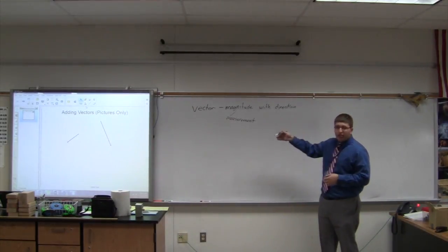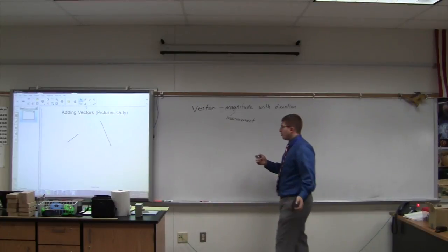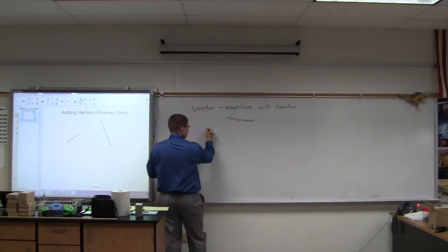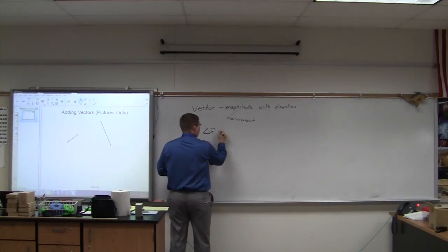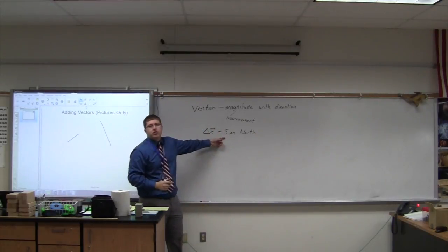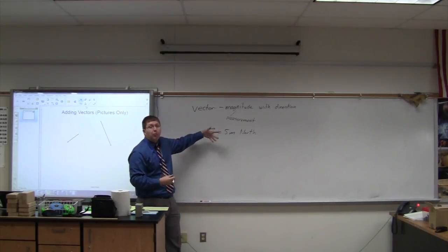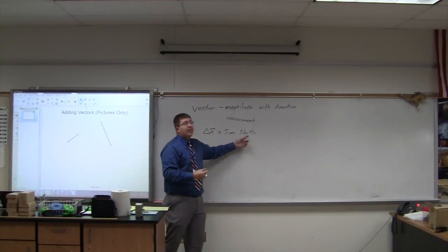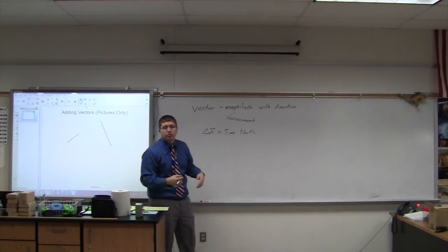So magnitude and direction, what does that look like? Well, very simply, we could have a displacement of 5 meters north. The 5 meters is the magnitude that tells us how big the displacement was. And then north tells us what direction the displacement was.